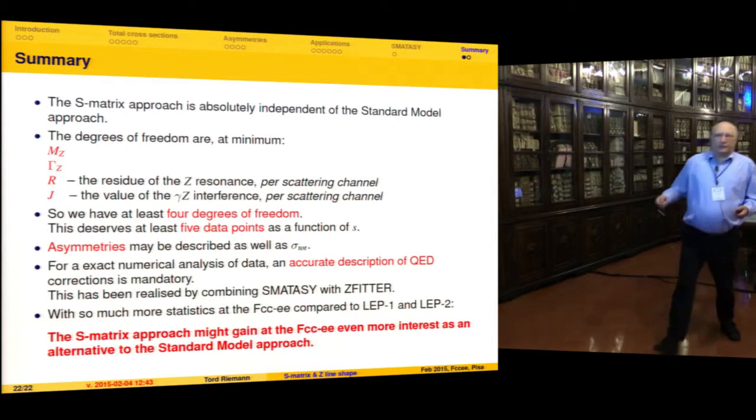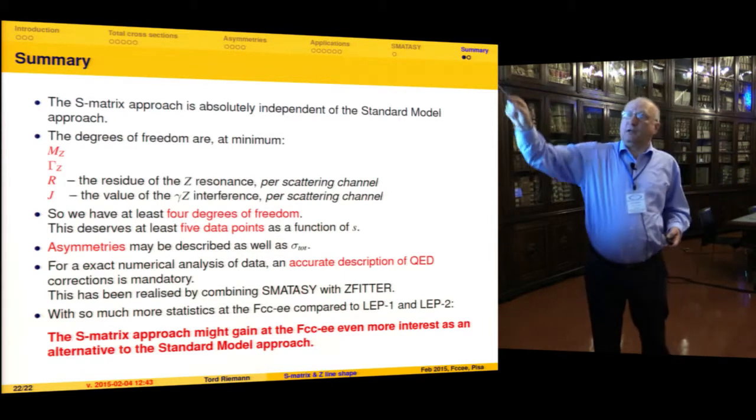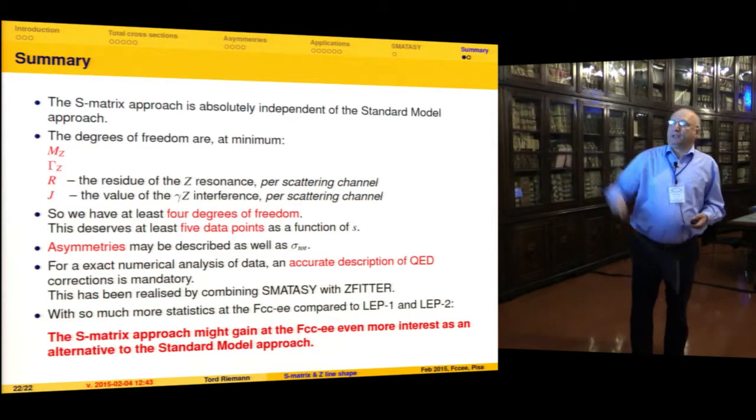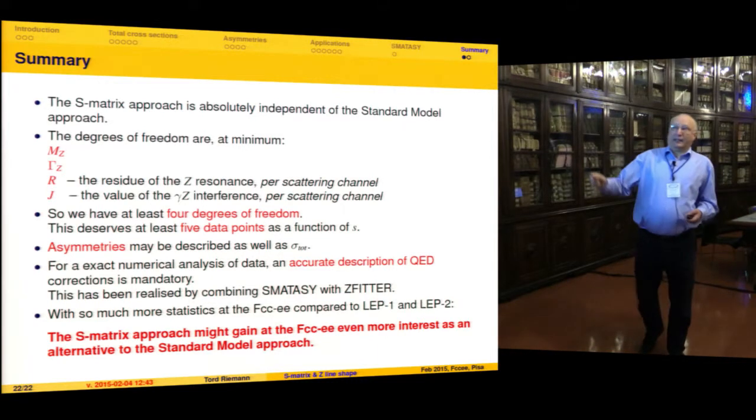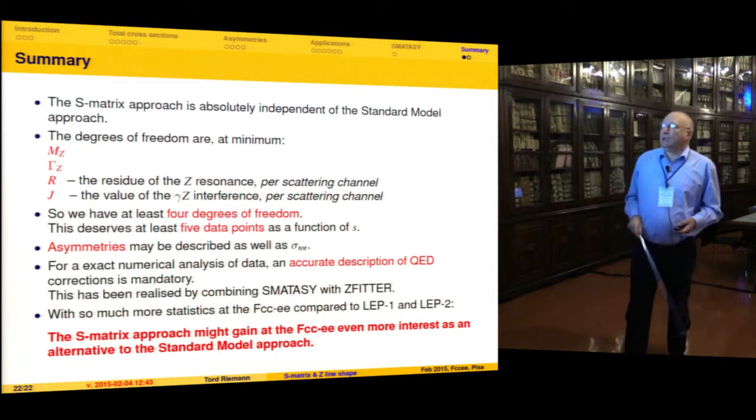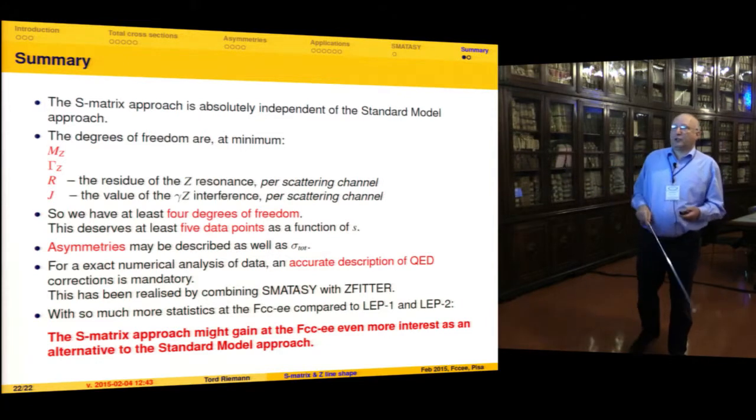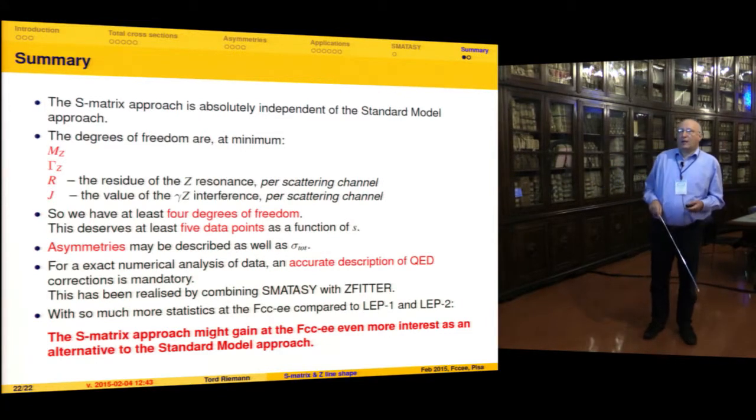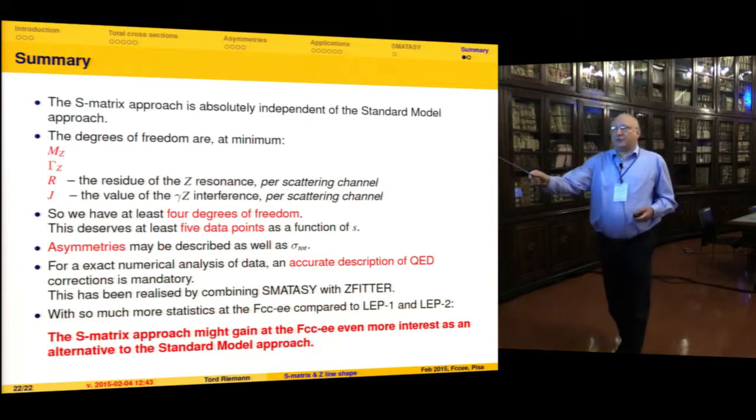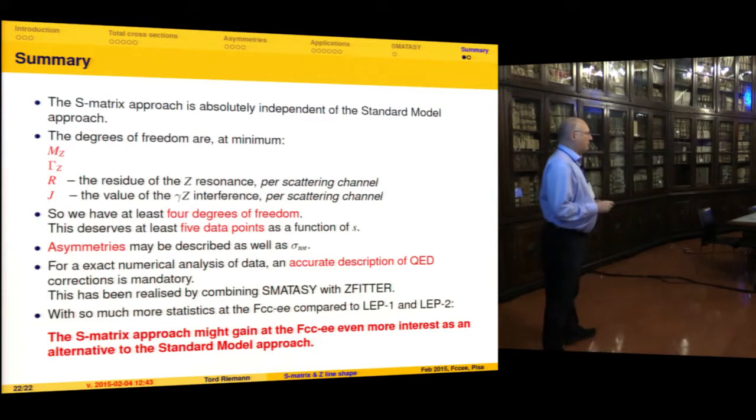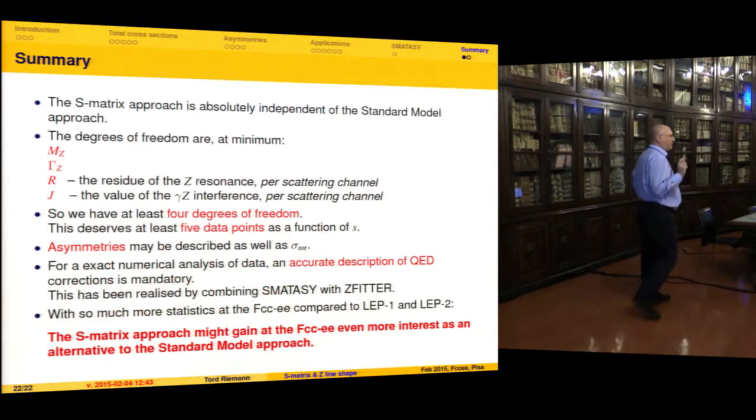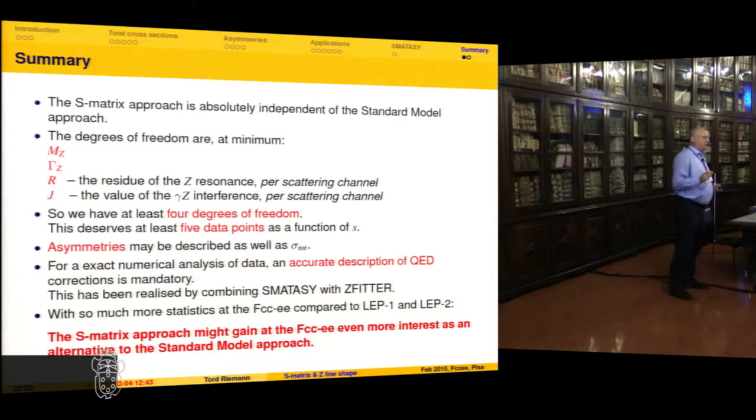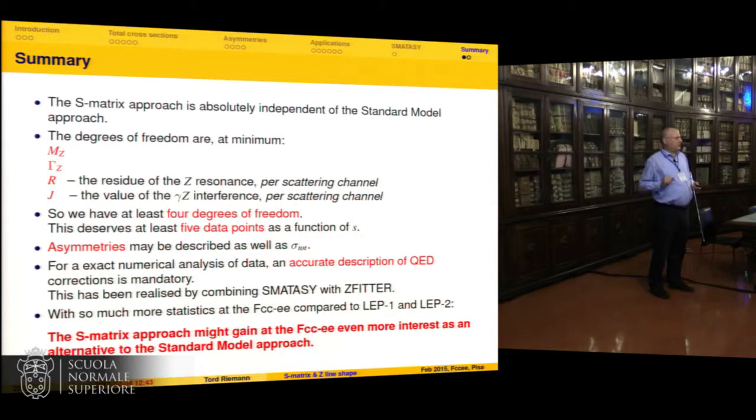Summary: we have four quantities to study in that approach. We need at least five data points somehow for that. One can describe asymmetries. One needs an accurate description of the QED corrections. I think if FCC-EE is really able to have a very good measurement of the energy of the beam, then this approach might be quite interesting to look for consistency at least of the other approaches. Thank you.